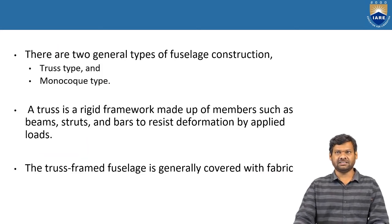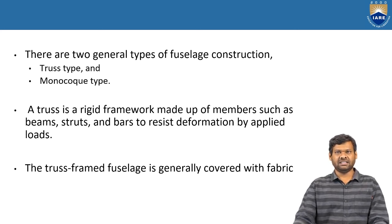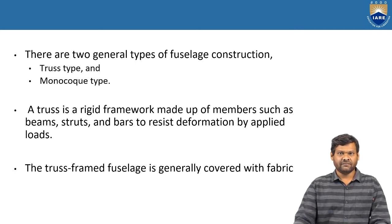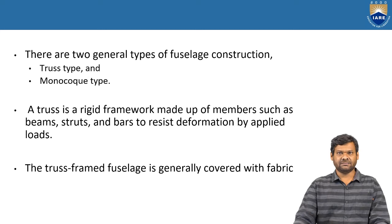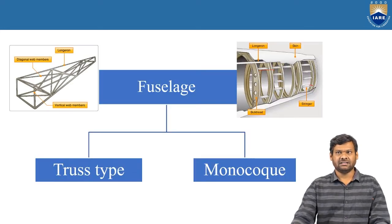A truss is a rigid framework made up of members such as beads, struts, and bars to resist deformation under applied loads. When aerodynamic or other types of loads act on an aircraft, they are resisted by the strut members. The skin carries direct load and transfers it to other elemental parts like longerons and bulkheads.